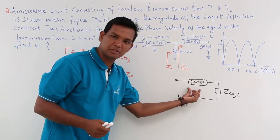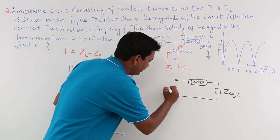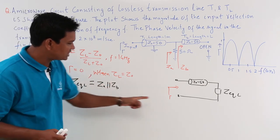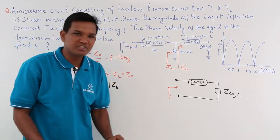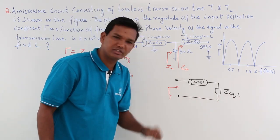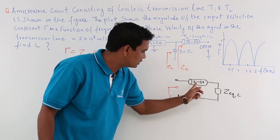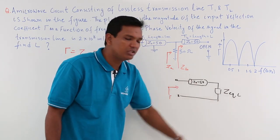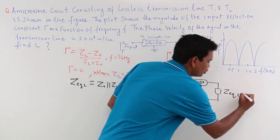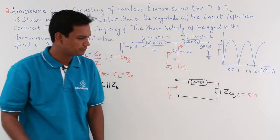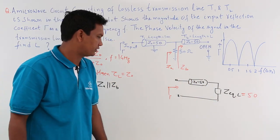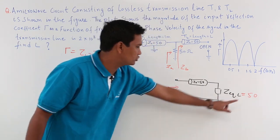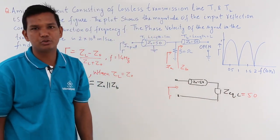We are looking at tau at this point. The reflection coefficient at 1 gigahertz would be 0 only if Z_equivalent_L equals Z₀. So Z_equivalent_L should equal 50 ohms — a matched impedance giving zero reflection coefficient.